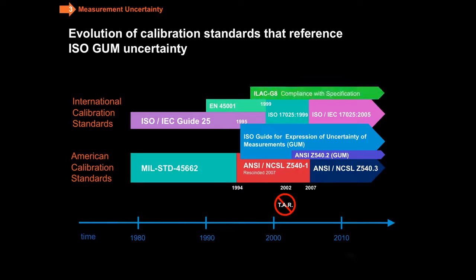And finally, ILAC G8, which is very important to many customers on how do you comply with specifications, makes specific references to the GUM, as does ILAC P14, which is a policy document that came out in 2010. When you use the accreditation symbol, you must have the GUM measurement uncertainty included in the report.